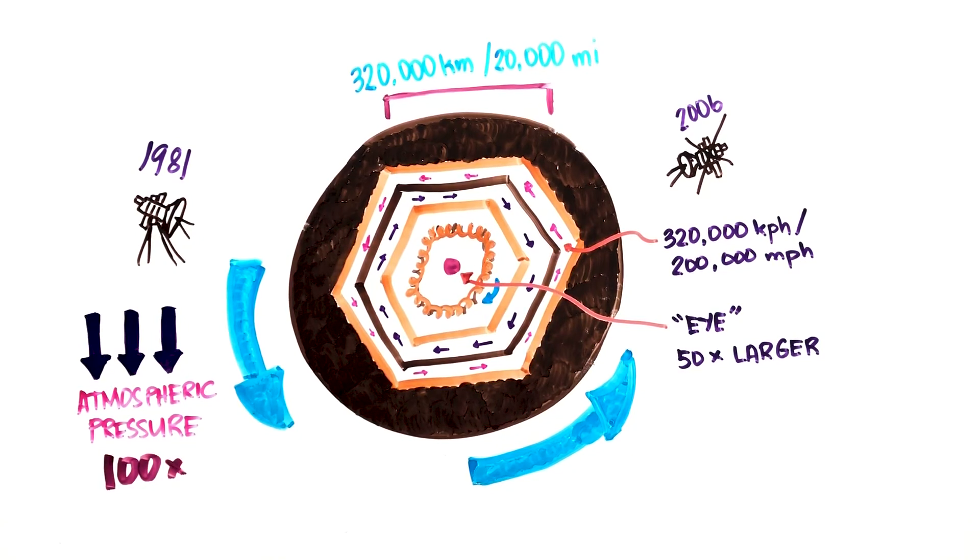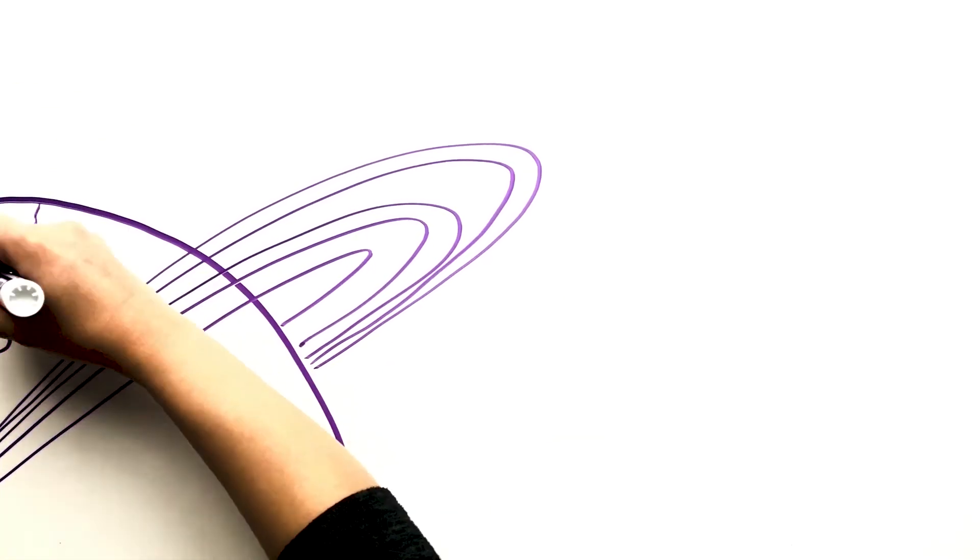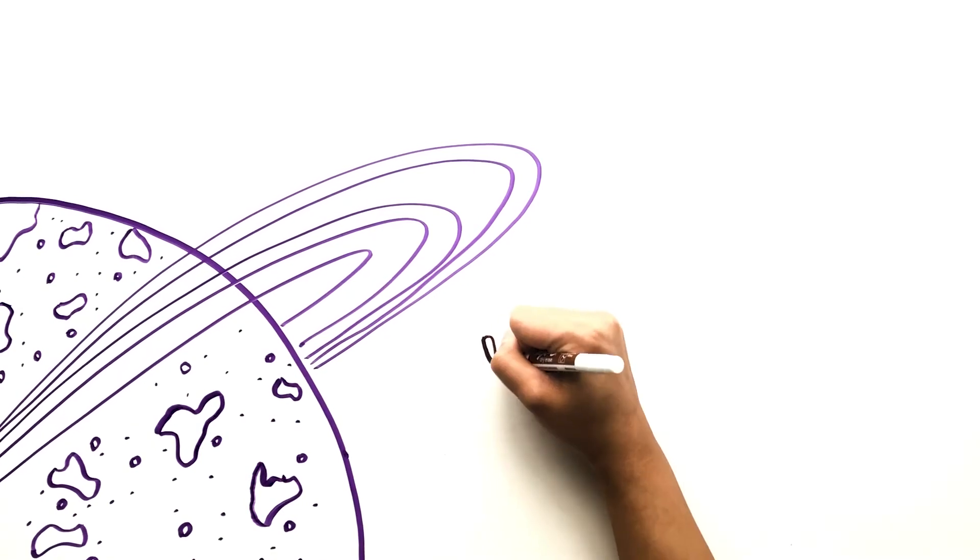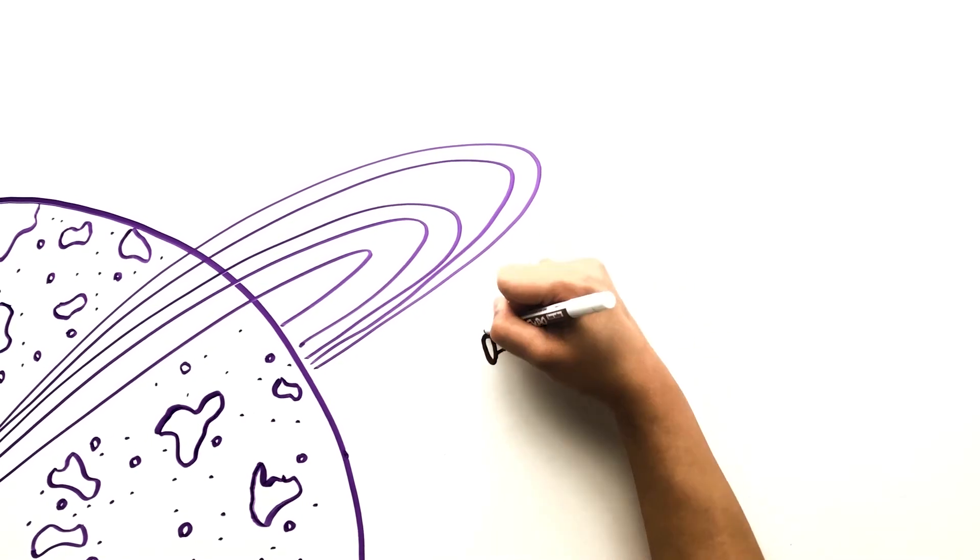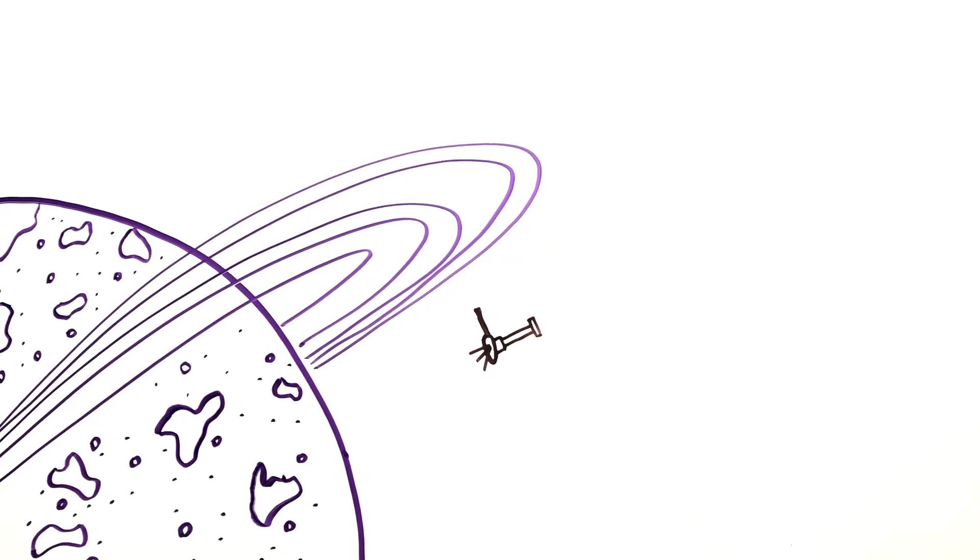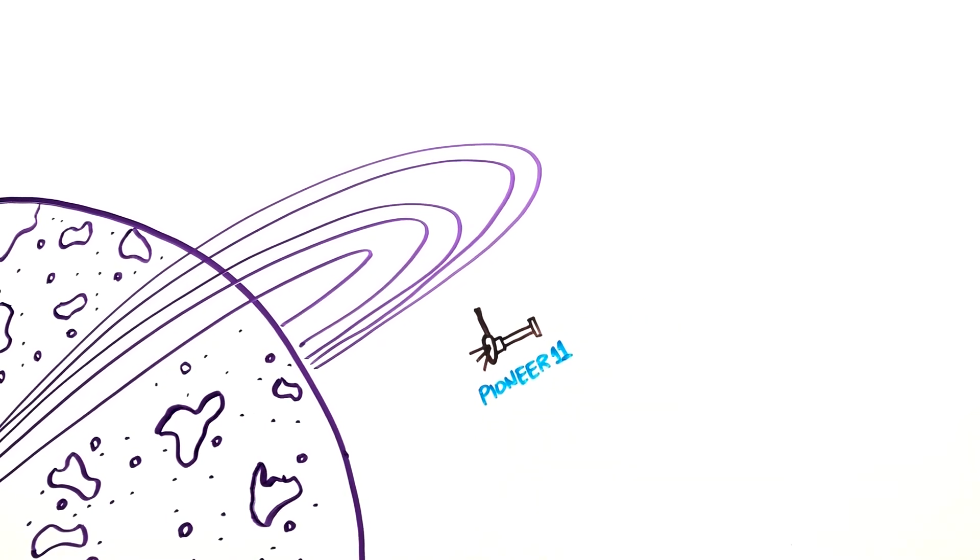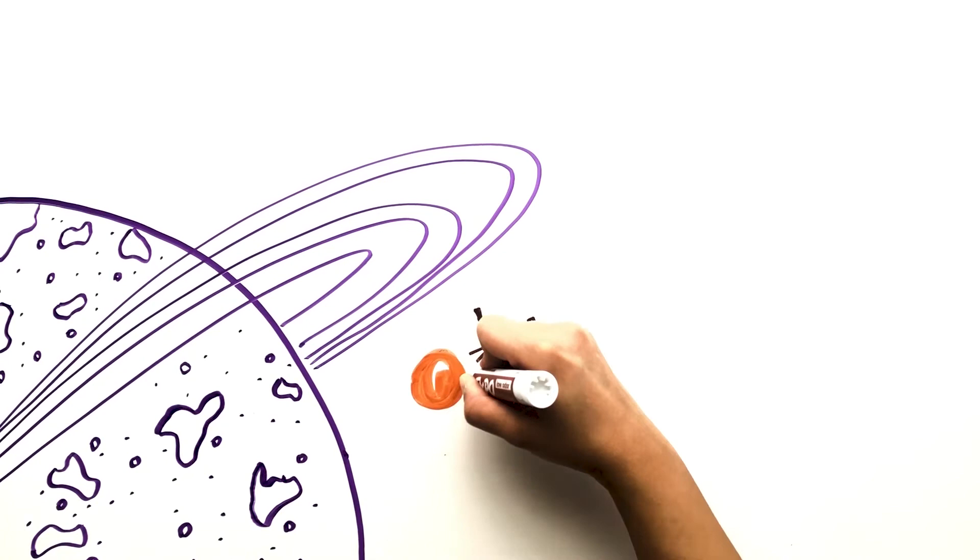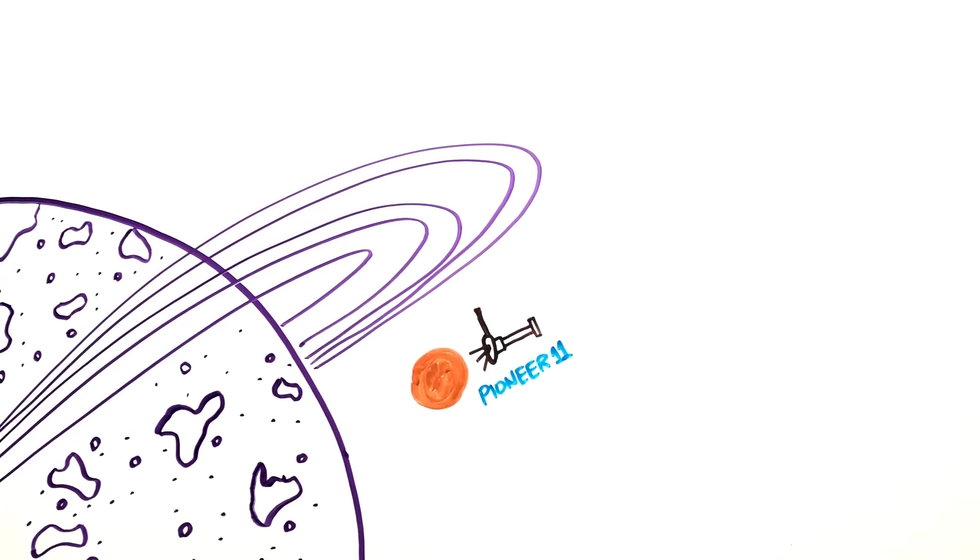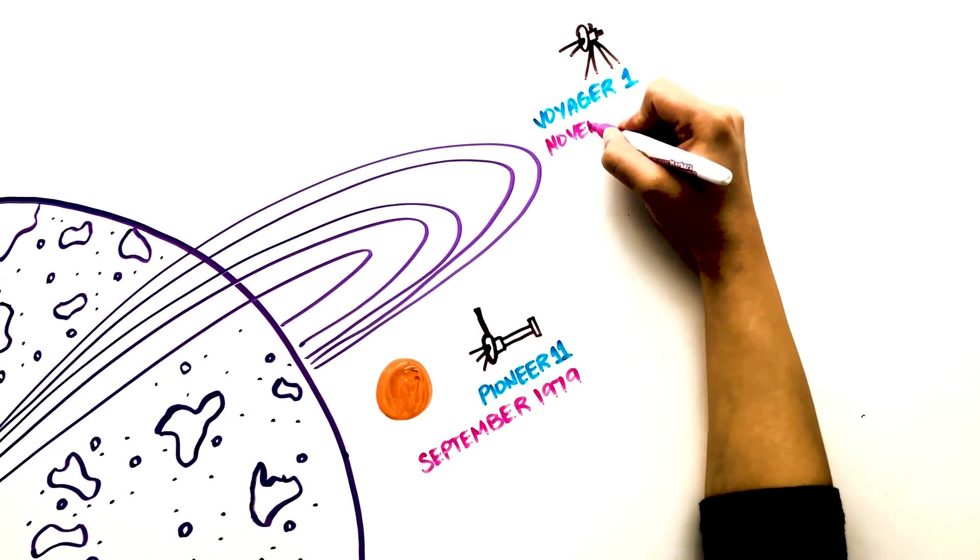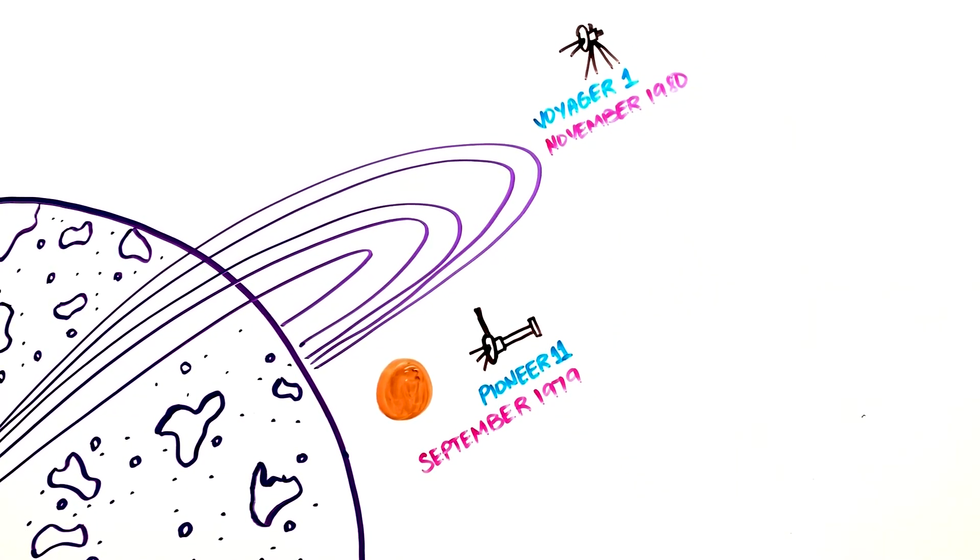There are four spacecrafts that have visited Saturn during flyby missions. Pioneer flew 20,000 kilometers off the top of the planet's cloud layer, took pictures of the planet and a few of its moons, studied its rings, and measured Titan's temperature. Voyager 1 sent back images of the planet, rings, and moons, and discovered that Titan's atmosphere was impenetrable in visible wavelengths.